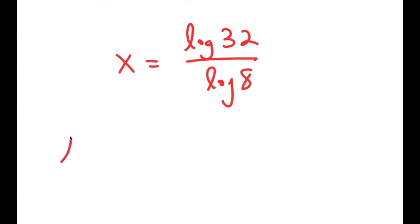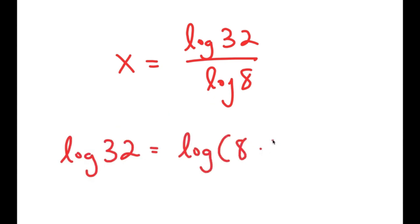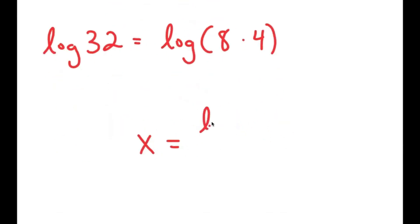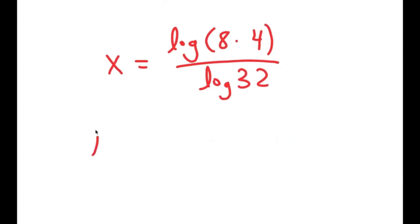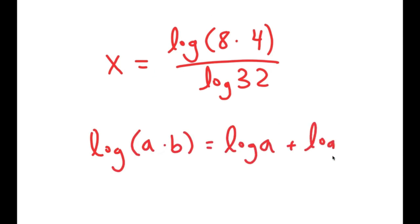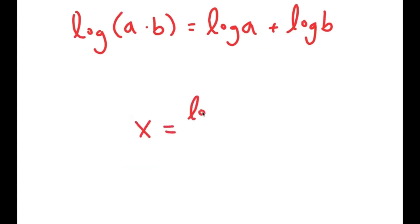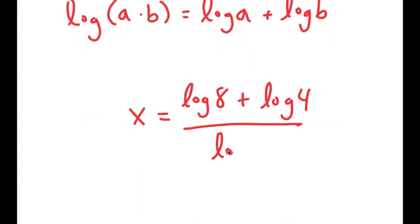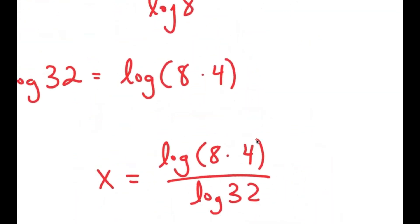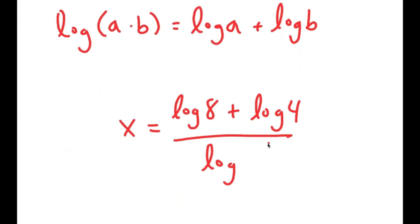Now, log of 32 is the same thing as log of 8 times 4. So I get log of 8 times 4 over log of 8. And if I have something in the form log of a times b, this is equal to log a plus log b. So in this case, this is going to equal log of 8 plus log of 4, all over log of 8.